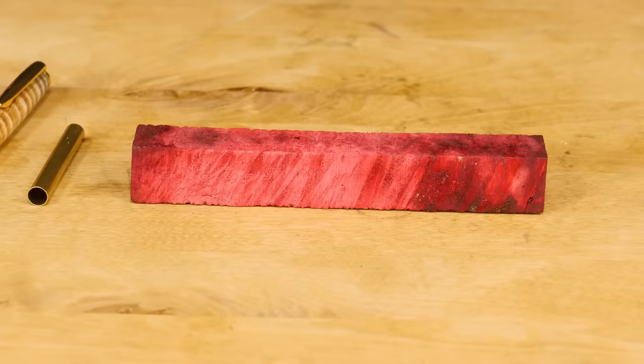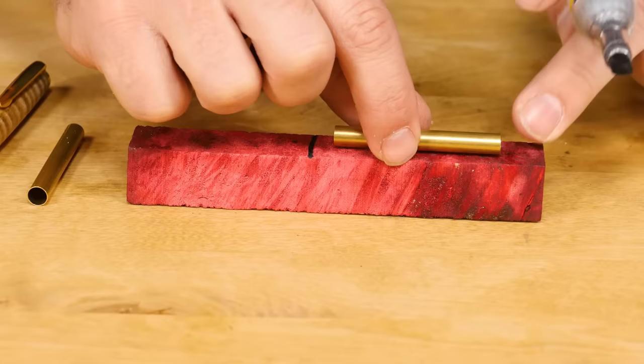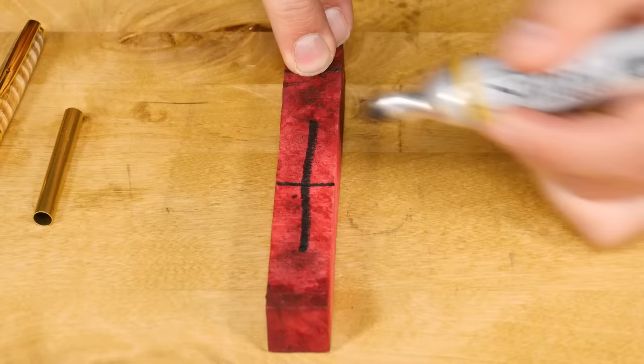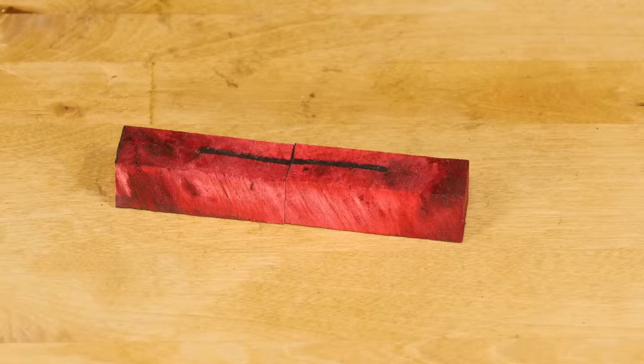Now take the brass tubes and place one on top of the blank flush with the end. Make a mark about a quarter inch longer than the tube then repeat with the second tube. Mark the blank with a perpendicular line to help keep track of grain alignment. This will come in handy later.